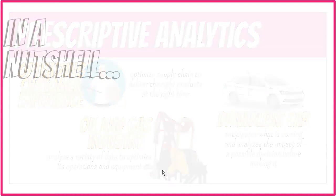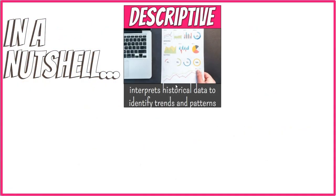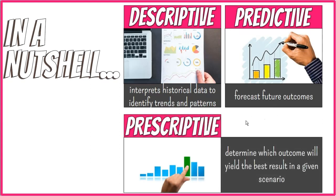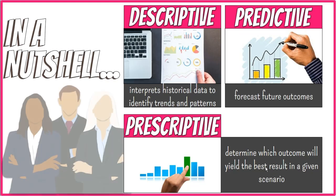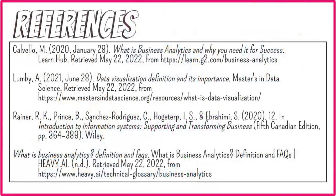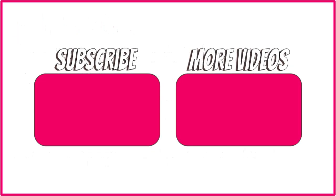In a nutshell, descriptive analytics interprets historical data to identify trends and patterns. Predictive analytics is the use of statistics to forecast future outcomes. And prescriptive analytics is the application of techniques to determine which outcome will yield the best result in a given scenario. Deciding which method to employ is dependent on the business situation at hand. I hope this video has shed some light on business analytics and its three different types. If you find this helpful, please like and leave a comment, and consider subscribing to the channel. Thank you for your time.